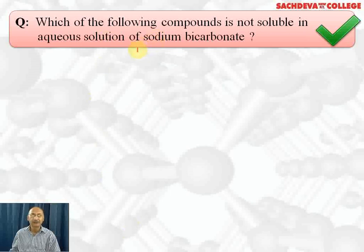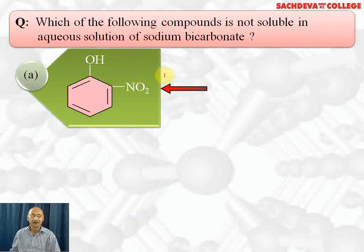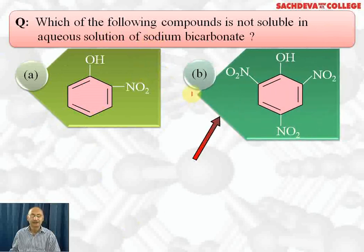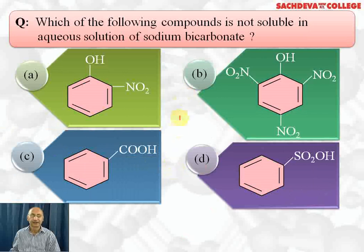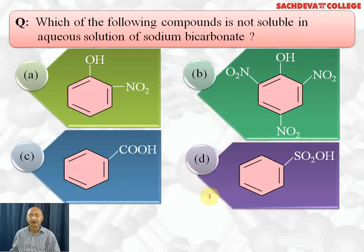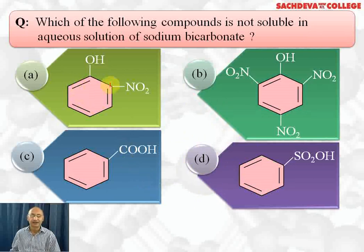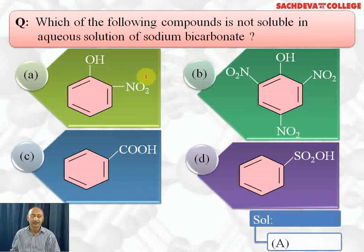Next question: which of the following compounds is NOT soluble in aqueous sodium bicarbonate? Options are orthonitrophenol, 2,4,6-trinitrophenol (picric acid), benzoic acid, and benzene sulfonic acid. Carboxylic acids react with sodium bicarbonate to give brisk effervescence due to CO2. Sulfonic acid also reacts similarly. Picric acid also reacts with sodium bicarbonate to give brisk effervescence due to CO2. All three of those are soluble in sodium bicarbonate because they are strongly acidic. Orthonitrophenol is weakly acidic — it reacts with NaOH but does not react with sodium bicarbonate. So the correct answer is A.